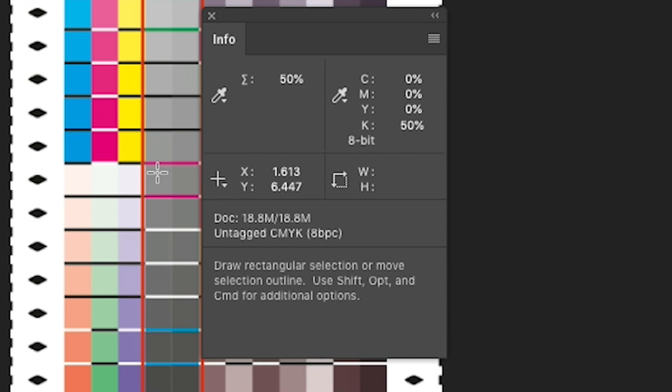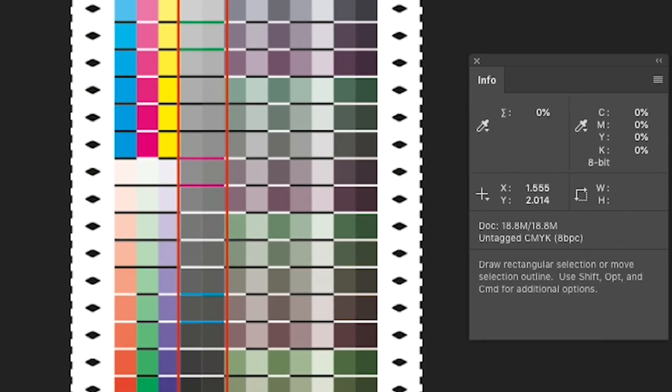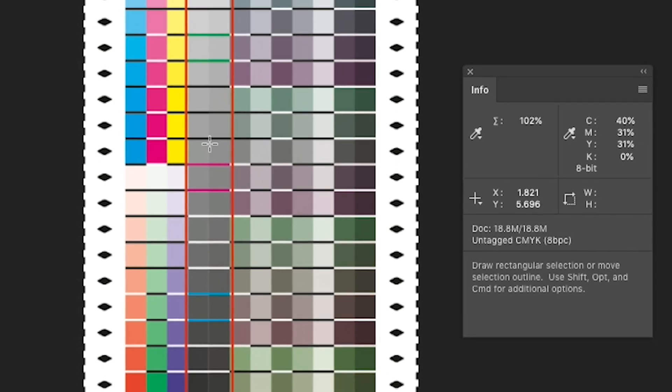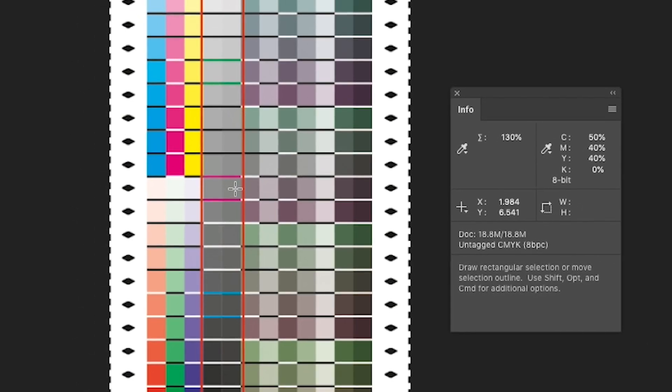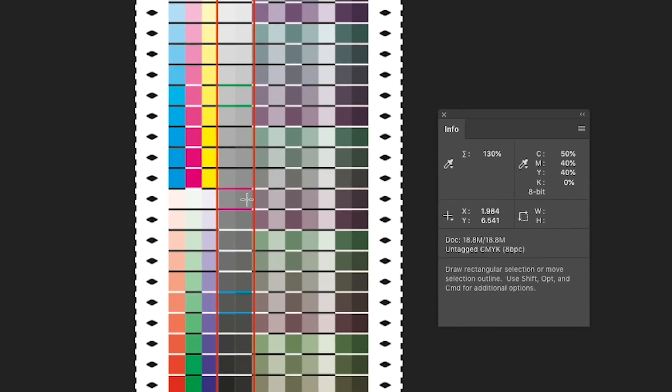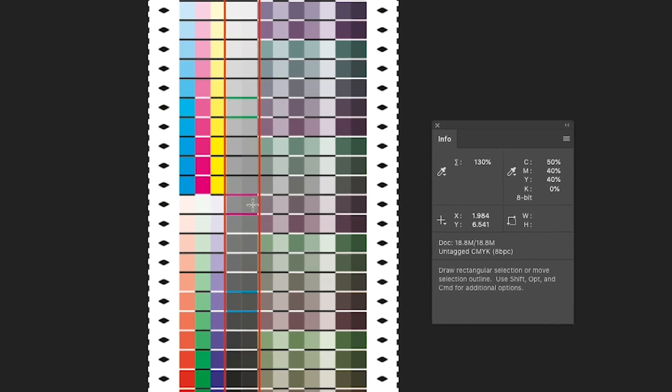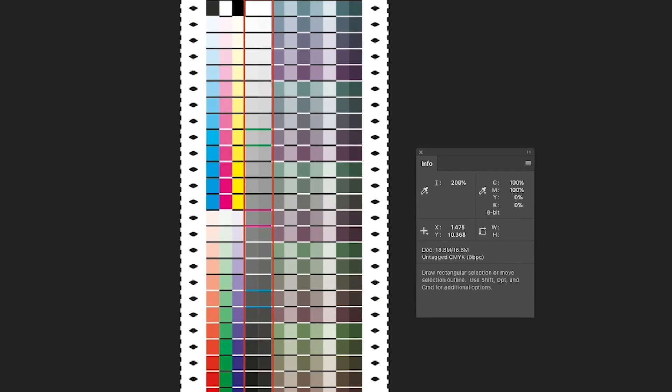Then if I go to the CMY ramp, that's the one on the right—so the left is black, the right is CMY. If I go to the 50 equivalent of the CMY, it's a combination of cyan at 50, magenta at 40 percent, and yellow at 40 percent. Now these grayscale ramps are incorporated into a couple other targets.